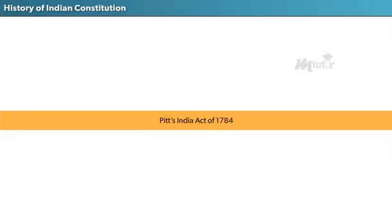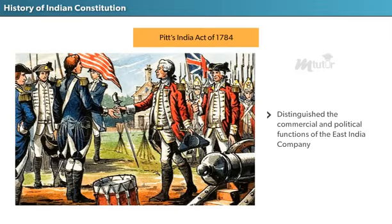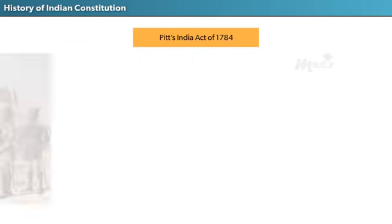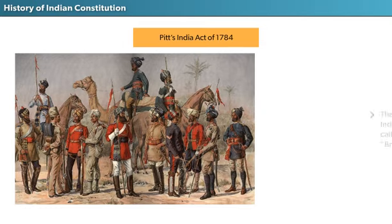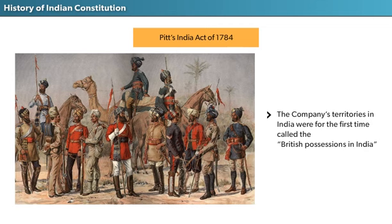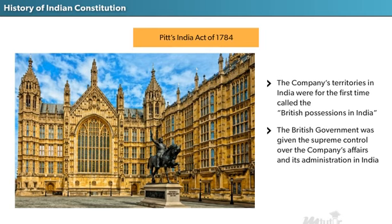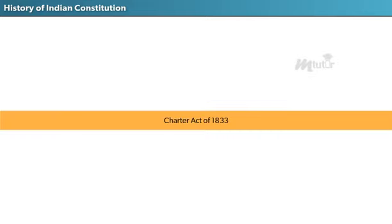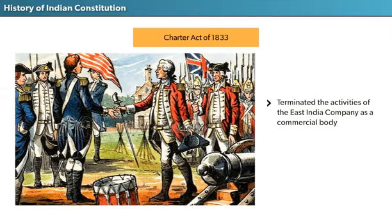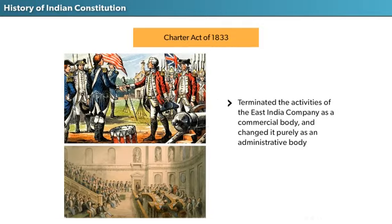The next Act was Pitt's India Act of 1784, which distinguished the commercial and political functions of the East India Company. This Act was significant for two reasons: first, the Company's territories in India were for the first time called the British possessions in India; and second, the British government was given supreme control over the Company's affairs and its administration in India. The next Act was the Charter Act of 1833, which was the final step towards centralization in British India. It terminated the activities of the East India Company as a commercial body and changed it purely into an administrative body.